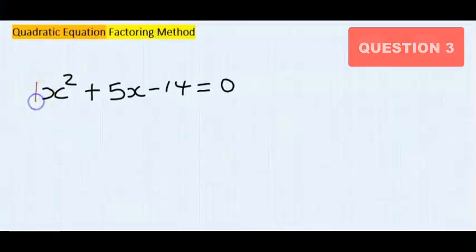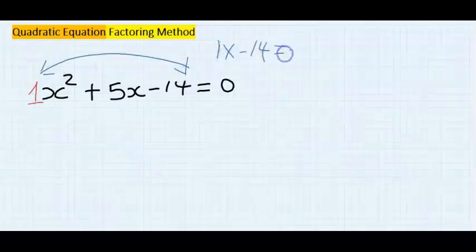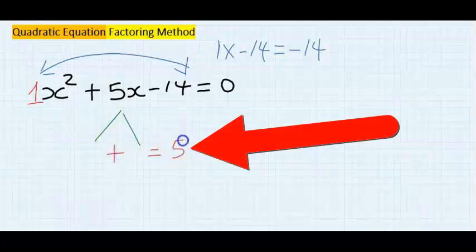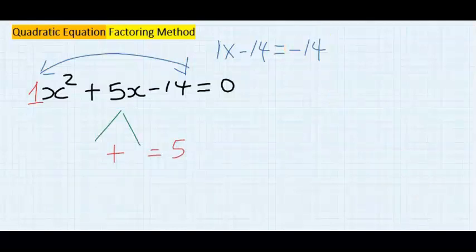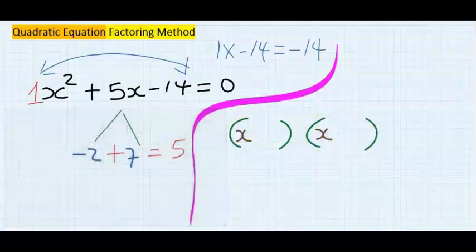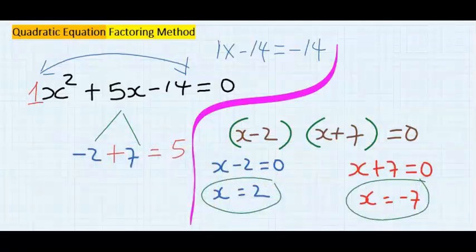To solve this by the factorization method, use the coefficient of x² and multiply by 14 — that is one times minus 14, giving minus 14. Split the middle term into two numbers that add to give five and multiply to give minus 14. The two numbers are minus two and seven. Open two brackets with x in each, placing minus two and plus seven. Solving gives x equals two and x equals minus seven.